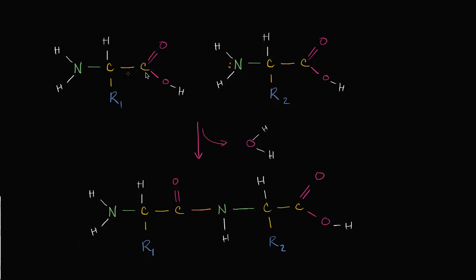I've got two arbitrary amino acids here. We recognize the telltale signs of an amino acid: we have an amino group right over here — that gives us the 'amino' in amino acid. We have a carboxyl group right over here — that's the acid part. In between we have a carbon called the alpha carbon, and that alpha carbon is bonded to a hydrogen and some type of side chain. We'll call these side chains R1 and R2.